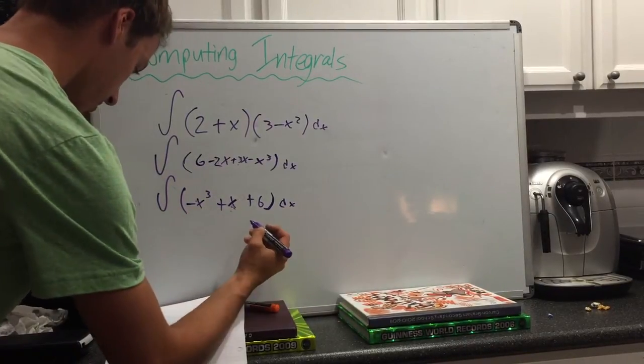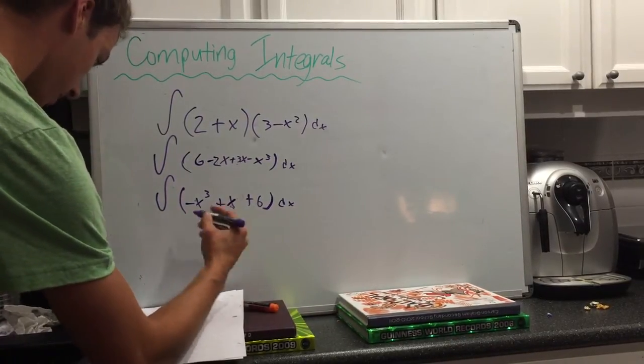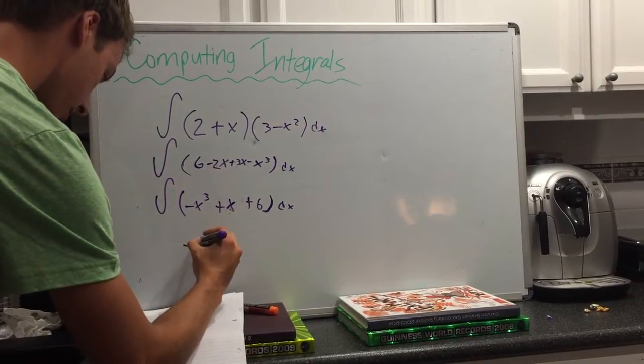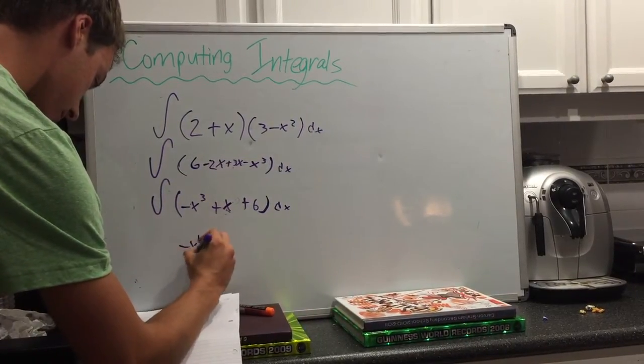This negative x cubed becomes negative x to the 4 over 4.